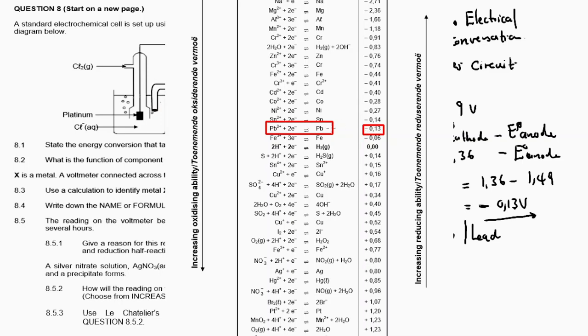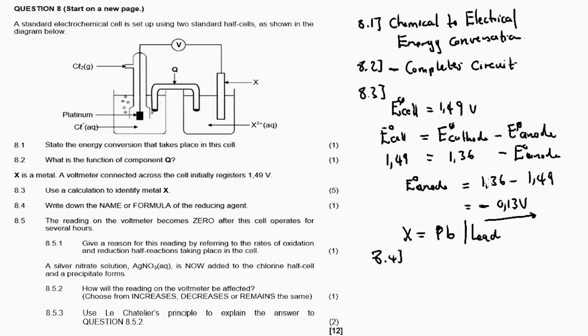Lead has a stronger reducing ability than chlorine. From the bottom to the top of the table, there's increasing reducing ability. When comparing chlorine and lead, lead is higher, so the answer is lead. Lead is the reducing agent. From the table, going from bottom to top, we see there's increasing reducing ability, so lead is above chlorine for reducing ability.